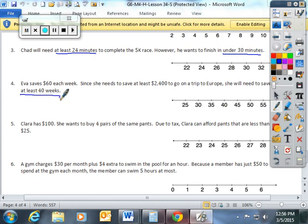Number five. Clara has $100. She wants to buy four pairs of the same pants. Due to tax, Clara can afford pants that are less than $25.